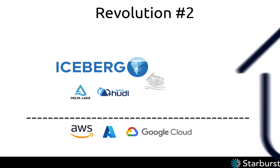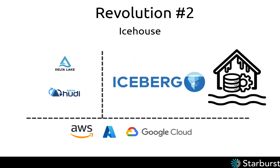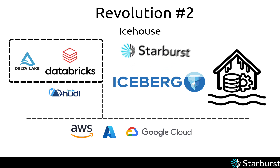Revolution number two: the Icehouse. The second revolution is all about openness, and in this, Iceberg is a world apart from its competitors, Delta Lake and Hudi. Delta Lake is deeply tied to the Databricks ecosystem, and although nominally open source now, it began its life as a proprietary technology. This means development of the table format is always guided first and foremost by one company, one set of technology, and one set of optimizations. Although Starburst integrates with Delta Lake in a performant manner, not every system does, and a proprietary approach runs through its technological DNA, making it far less suitable as a broad-based technology leading the charge into the future for the entire industry.